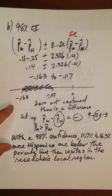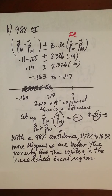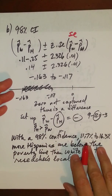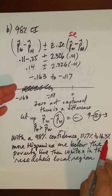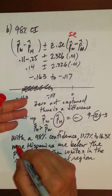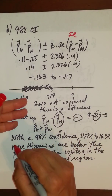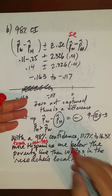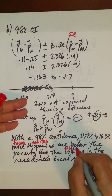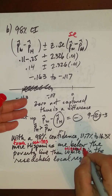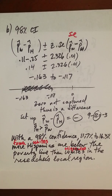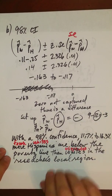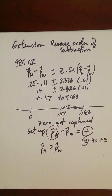You could also write the sentence as: with 98% confidence, 11.7% to 16.3% fewer whites are below the poverty line than Hispanics. It means the same thing — just a different way of saying it, and both are fine. That concludes this video. Thank you for listening.